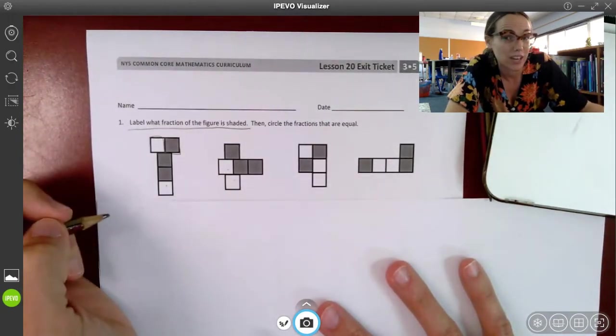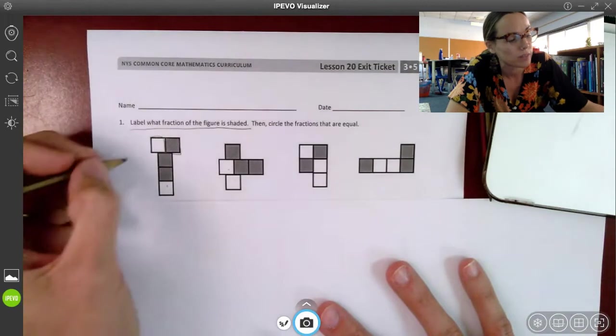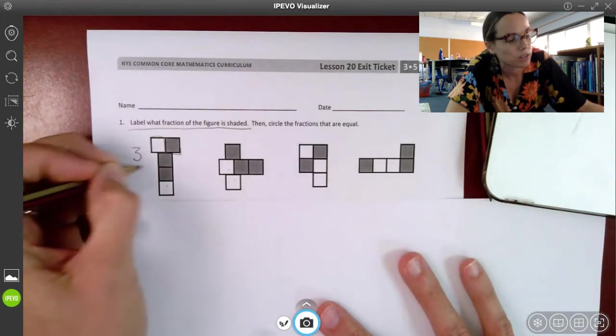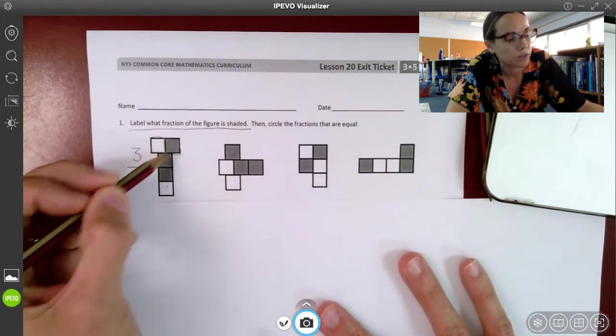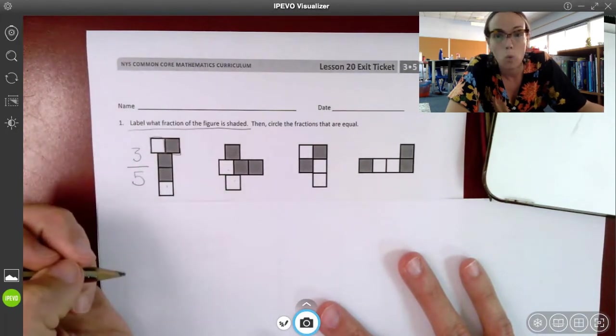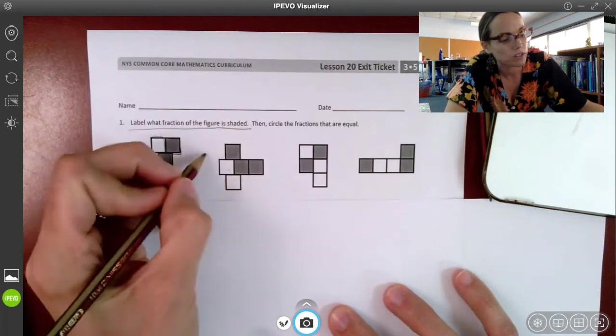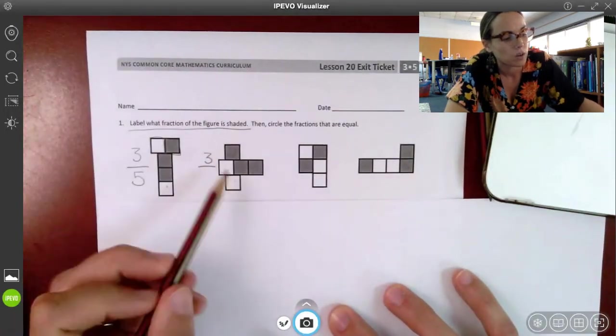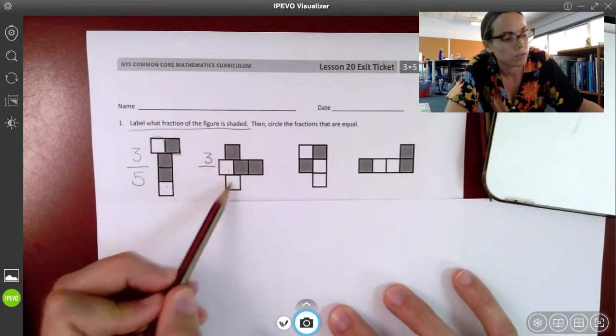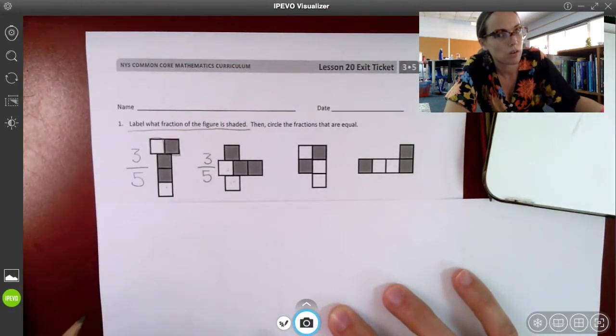Let's take a look at how many parts are shaded, which gives us our numerator. Here we see three parts are shaded, and there are one, two, three, four, five parts total. Let's take a look at the next one. One, two, three parts are shaded. There are one, two, three, four, five parts total.